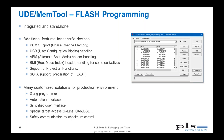UDE contains a flash programming tool, which is also available as a standalone tool from PLS. This provides all the flash programming needed to bring your application to the target, as well as specific support for specific devices and an interface for automating flash programming — including gang programming for up to eight targets in parallel — and special interfaces like K-Line, CAN, and BSL.